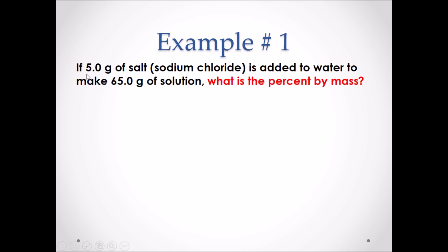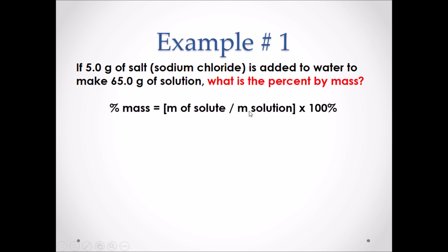Example 1: If 5.0 grams of salt is added to water to make 65.0 grams of solution, what is the percent by mass? We are solving for percent by mass because we are given grams of solute and grams of overall solution. Percent by mass equals mass of solute divided by mass of solution times 100%: 5.0 g divided by 65.0 g times 100% equals 7.7%.